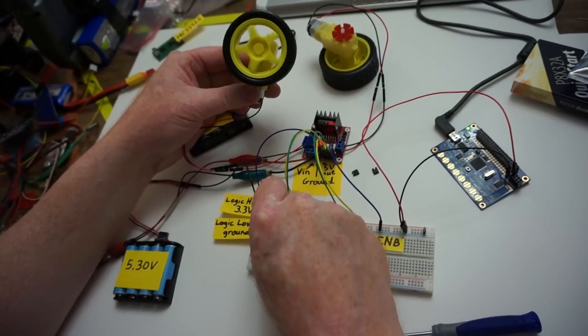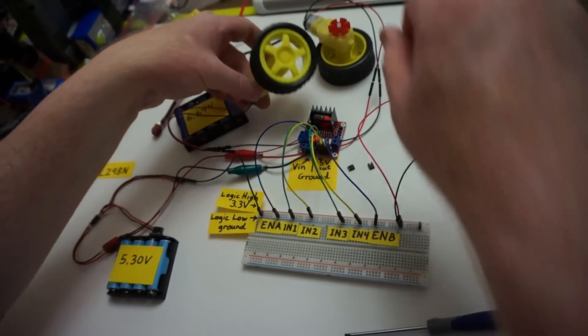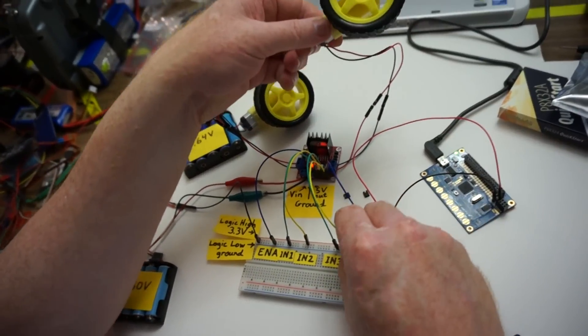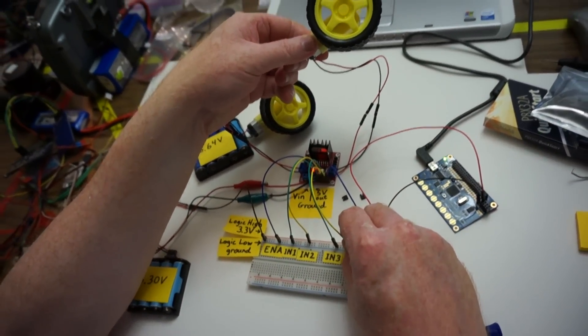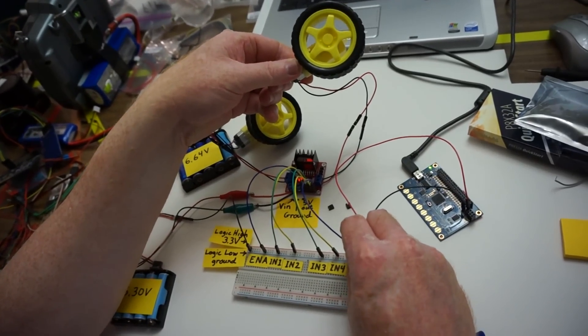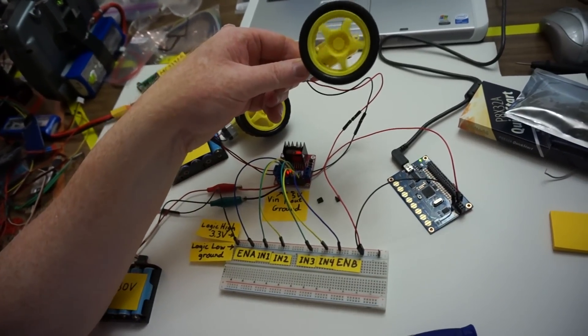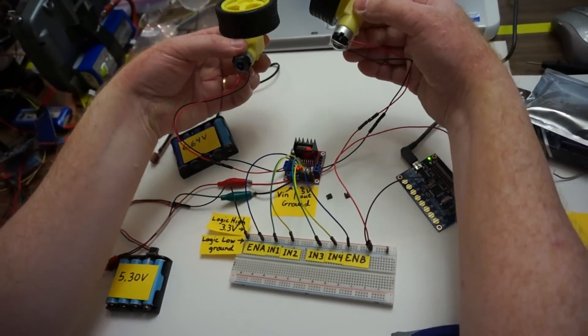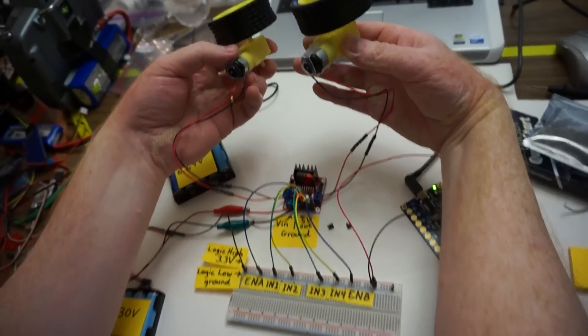Okay, so I'm going to set this back low, enable A, and we'll just turn on motor B. Let's do this one in reverse. Put input four high and now enable high. And these, if you'll notice, the wires on these are opposite. So the red and the black are switched.